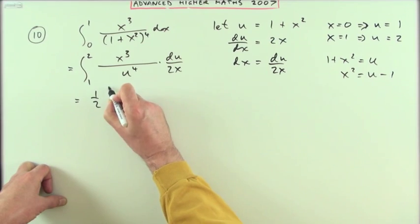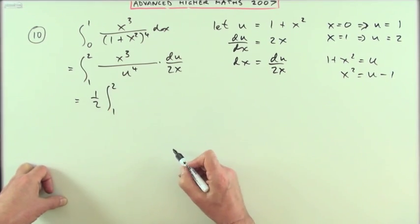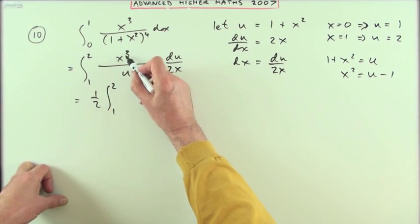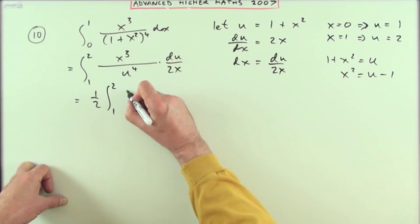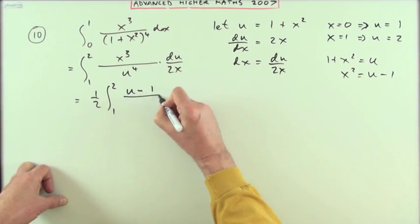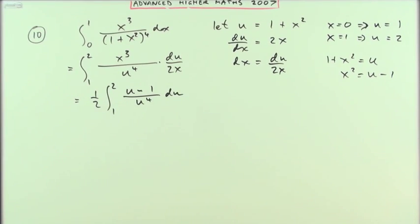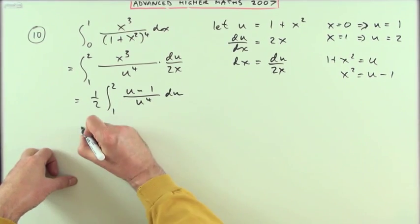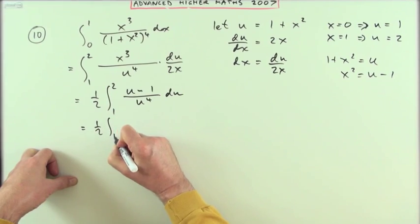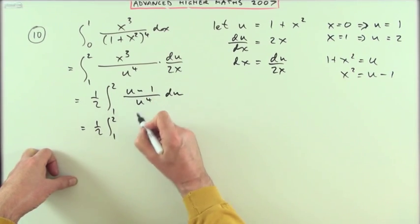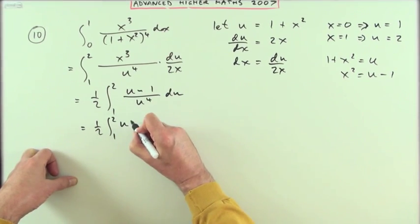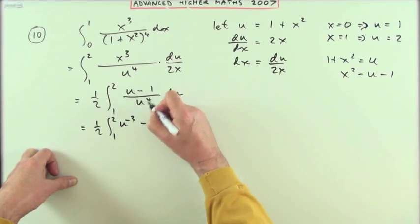That's in the denominator, so I've got half of the integral from 1 to 2 of, with that cancelled out, that'll be x squared which can be replaced with u minus 1 over u to the 4 du. Now that's quite manageable because I can split those. That's going to be a half of the integral from 1 to 2 of u over u to the 4, so I could write that as u to the negative 3 minus 1 over u to the 4, so that's u to the negative 4 du.